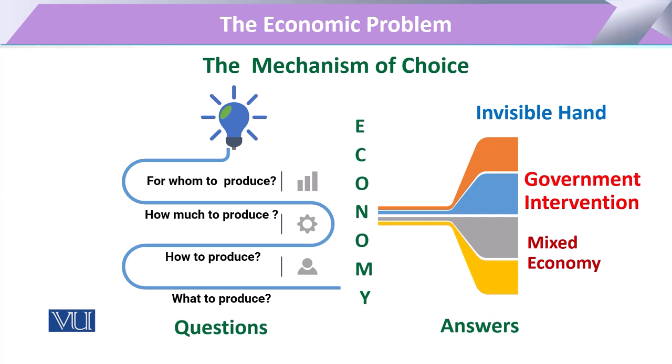In general, there are three types of the mechanism. One is called the invisible hand. The other is called government intervention. And the third is mostly the mixed economy.